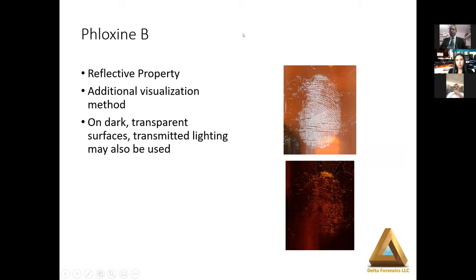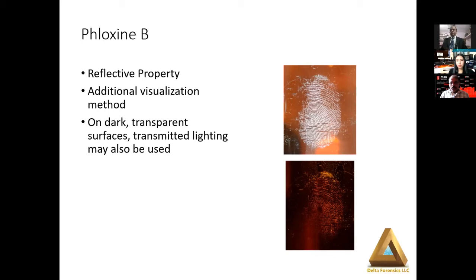Generally speaking with latent print processing, light can really be your best friend. Just changing the angle of light allows the matrix or the development of your reagents to look very different. If you can visualize it using lights at certain angles, you can photograph it and capture it under those same conditions. With evidentiary photography — basically if you can see it, you can photograph it; we just replace our eye with the lens. Using lights at different angles is a key to all aspects of latent print processing and development.